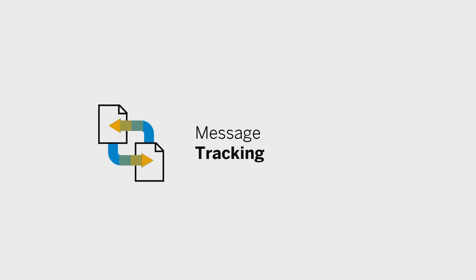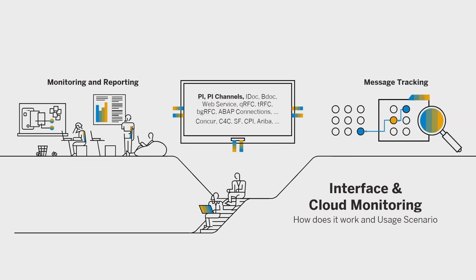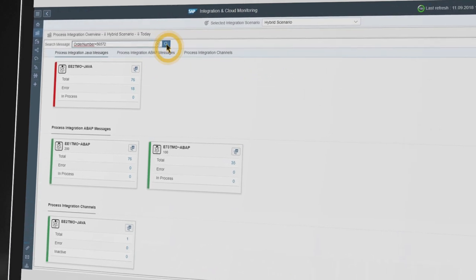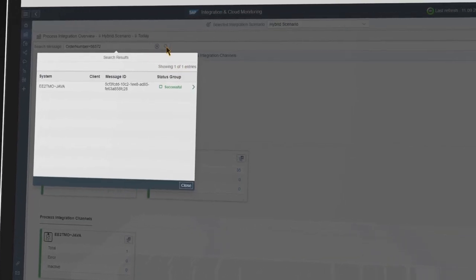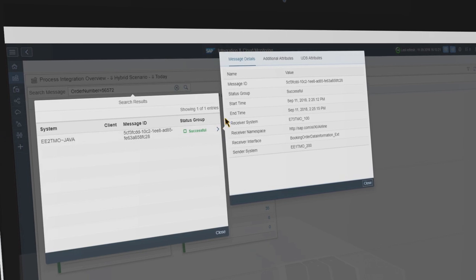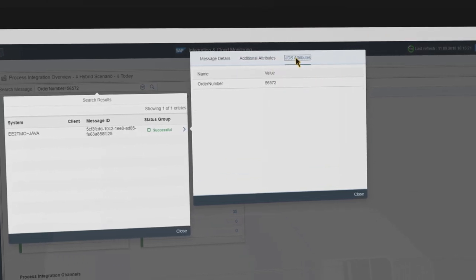Another useful way to use the Interface and Cloud Monitoring is the message tracking feature. Let's assume you are responsible for the message with order number 56572. Typical questions are: where is my order? Has the order proceeded successfully into the Process Orchestration system? Or has the order been accepted by the receiver system? Open the message search, put in your order number, and execute the cross-component message search. You get the related Process Orchestration message. In this case, the order was processed successfully. You also have access to the message data, message details, additional attributes, and user-defined search attributes.